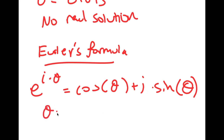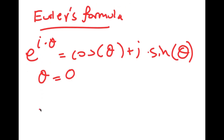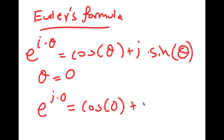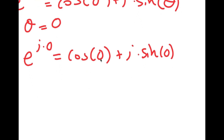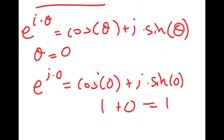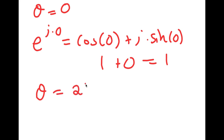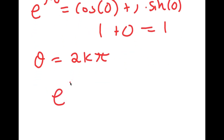Let's say that theta is equal to 0. Then we have e to the power of i times 0, which is equal to cosine of 0 plus i times sine of 0. Cosine of 0 is equal to 1, and sine of 0 is 0, so i times 0 is 0. So I have 1 plus 0, which equals 1. Now, another thing you need to know is if theta is equal to 2k pi — a full unit circle — then e to the power of i times 2k pi is equal to 1.